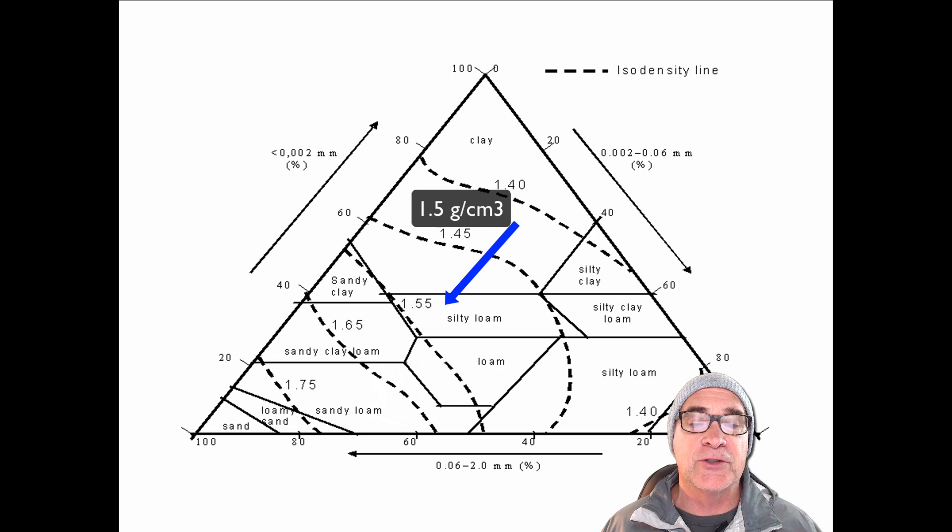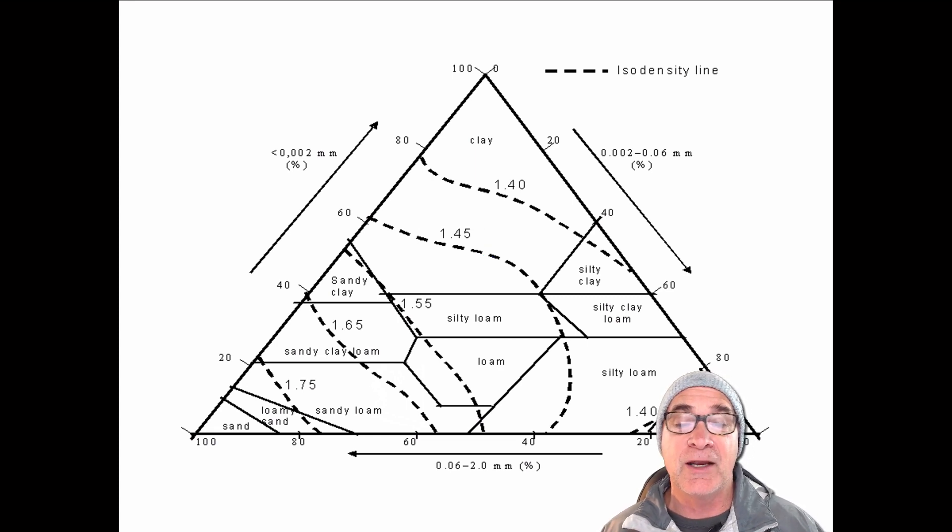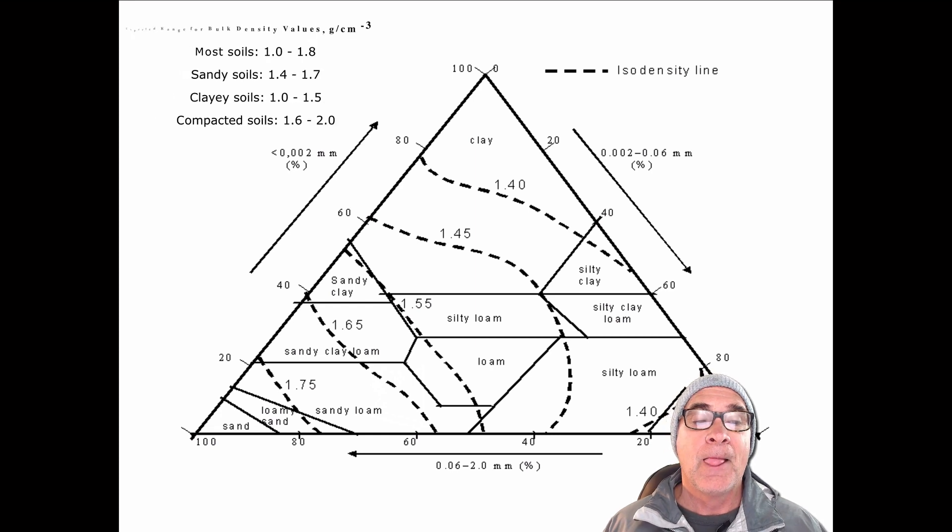So this is a soil texture chart, and if you look at those lines, they're kind of like reading a contour map. A 1.4 bulk density is kind of in the clay range, whereas 1.75 is somewhere in the sandy loam areas.